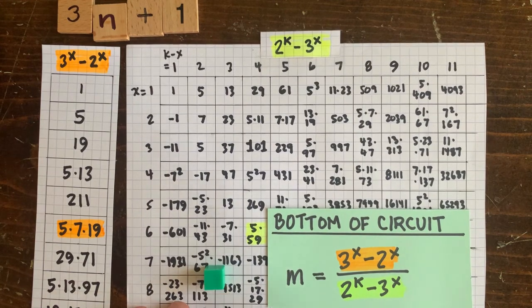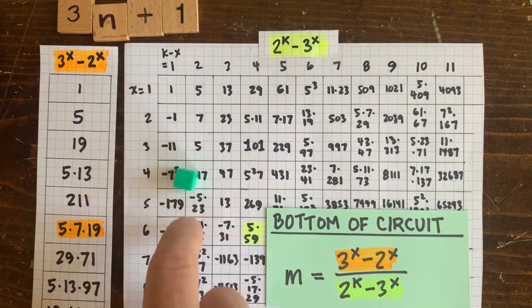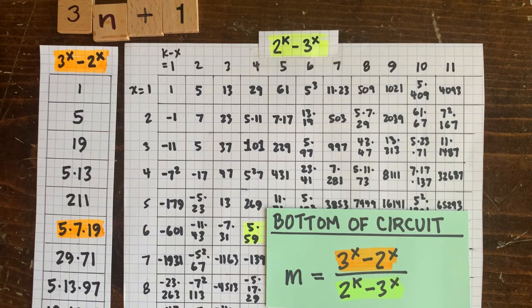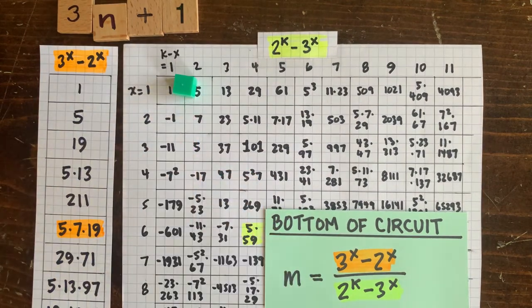And over to the left here, we have the numerator, which only depends on x. So if the denominator evenly divides the numerator, we have an integer circuit loop. And in the upper left-hand corner, we have one up move and one down move, which is the 1, 2, 1 circuit.